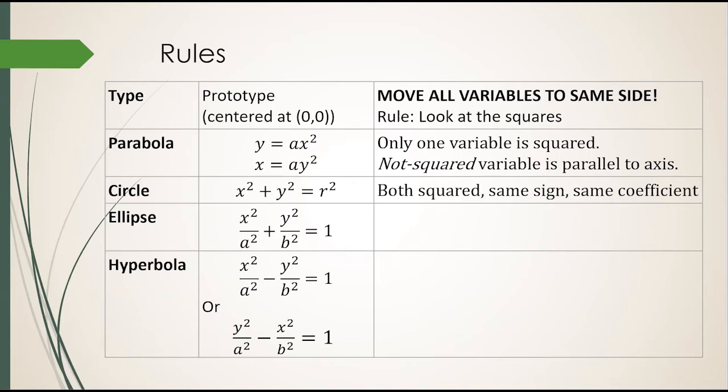If both variables are squared and they have the same sign and the same coefficient, it's a circle.